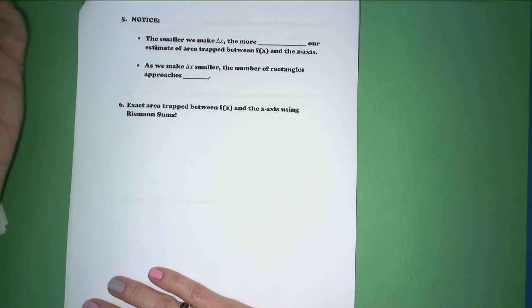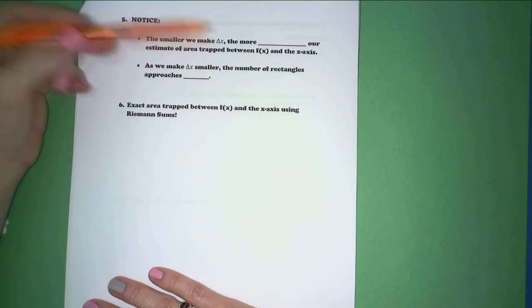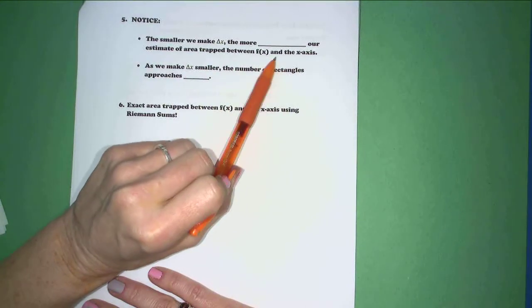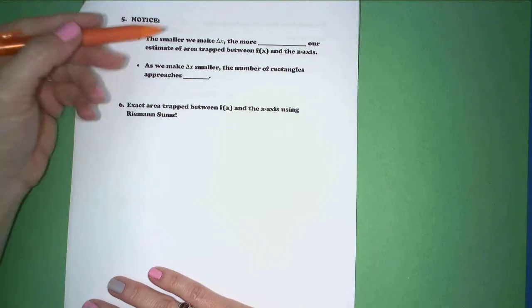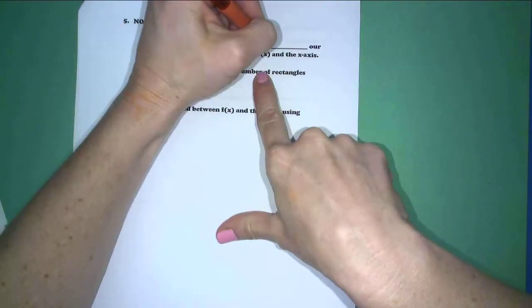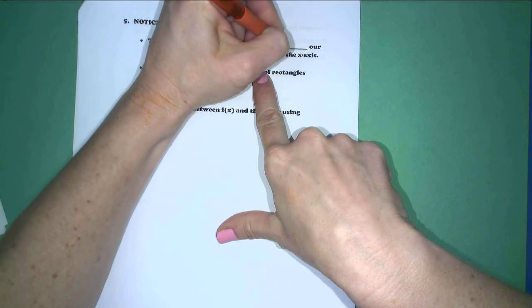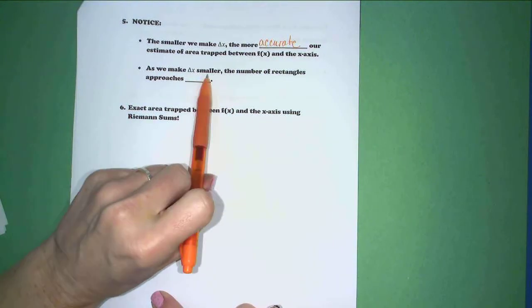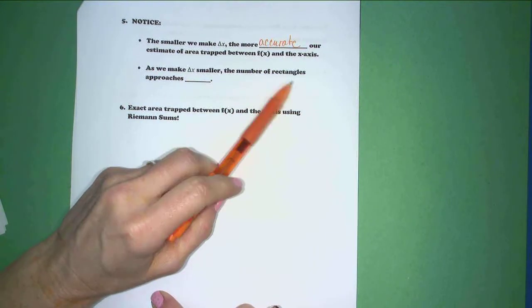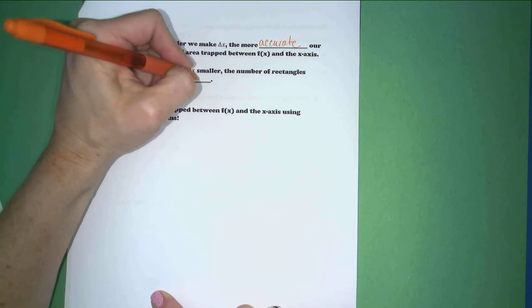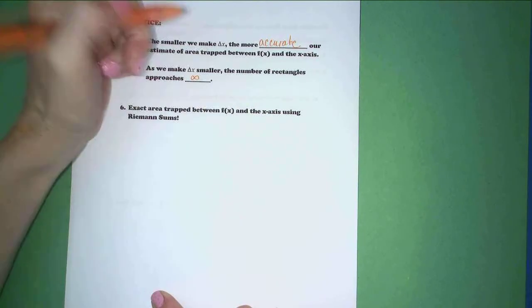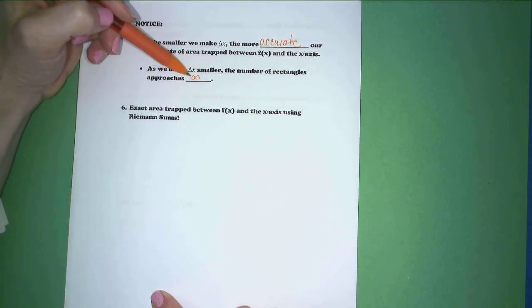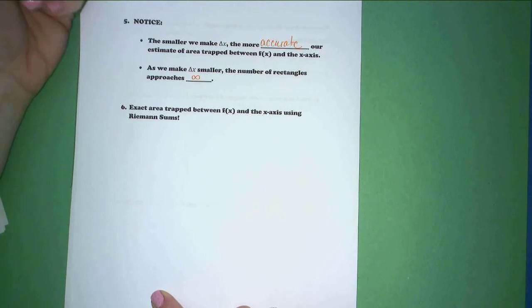So, it says, notice the smaller we make delta x, the more accurate our estimate of area trapped between f of x and the x-axis. I'm hoping you're thinking the smaller we made our base lengths, the more accurate our estimates of the true area became. As we make delta x smaller, the number of rectangles approaches infinity. So, this is what I was talking about. We can't model by hand an infinite number of rectangles or approaching an infinite number of rectangles, but we can contemplate it, which is what we're going to do.